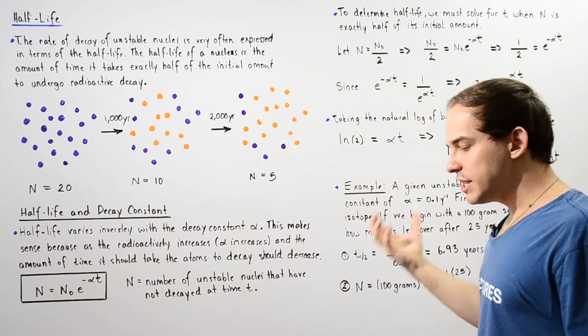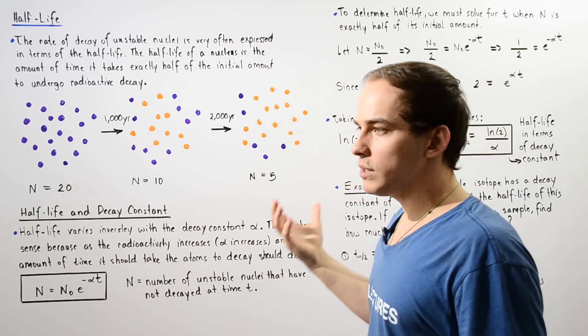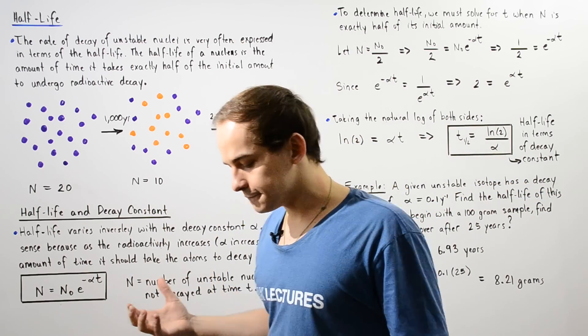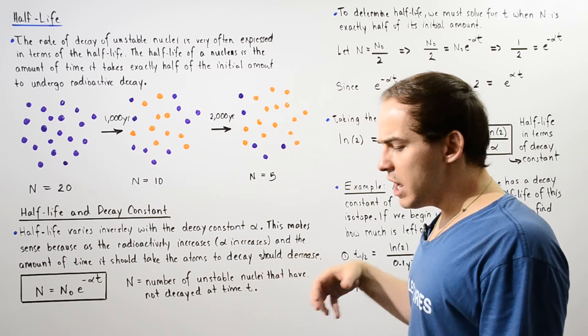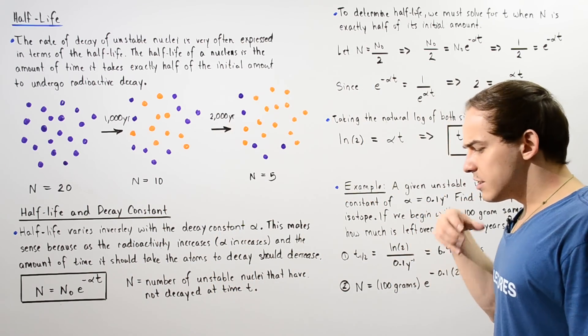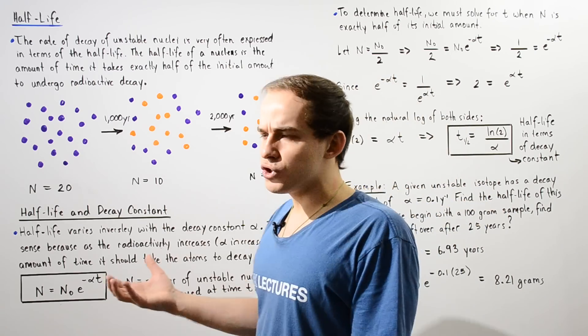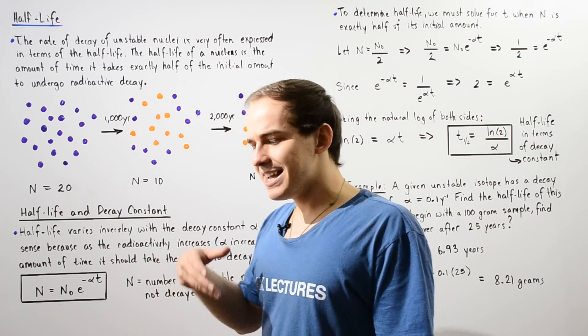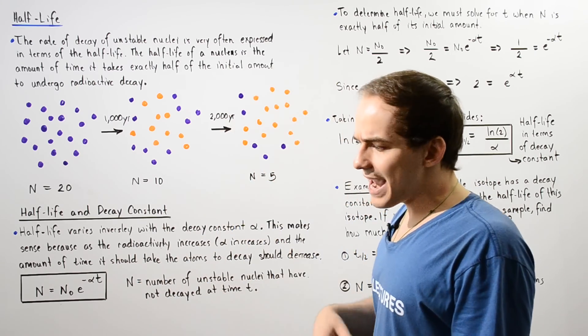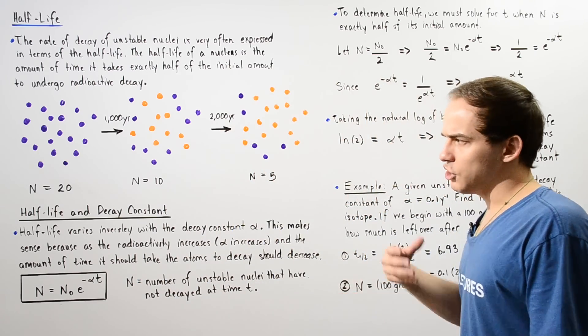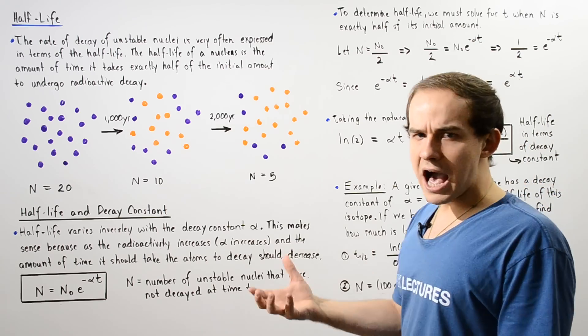So this is what we mean by a half-life. The units of half-life are typically seconds, hours, days, or years — the units of half-life are units of time.